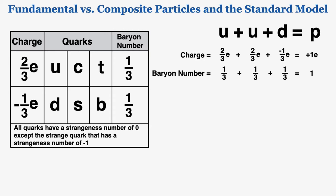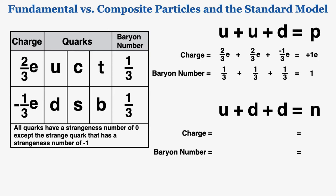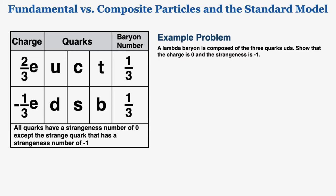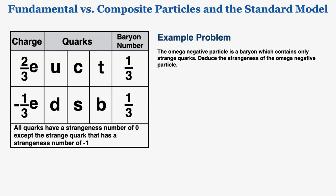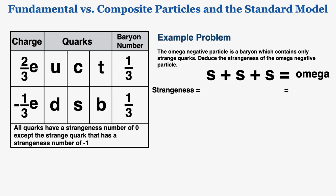Example problem: A lambda baryon is composed of up, down, and strange quarks — show that the charge is 0 and strangeness is −1. The up quark has charge +2/3, the down quark −1/3, and the strange quark −1/3, so total charge = 0. Strangeness = 0 + 0 + (−1) = −1, since only the strange quark has a strangeness of −1. Another example: the omega-minus particle is a baryon containing only strange quarks, so its strangeness is −1 × 3 = −3.